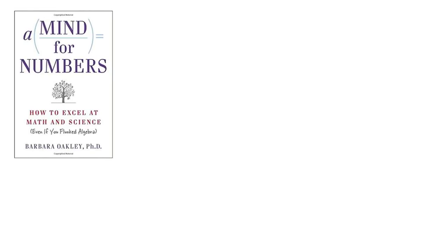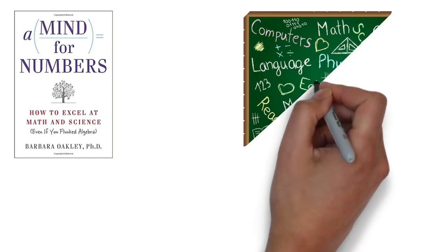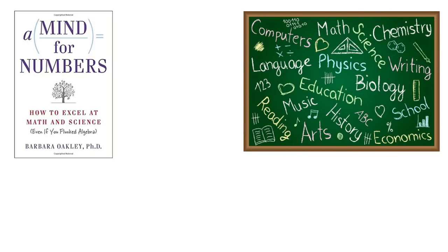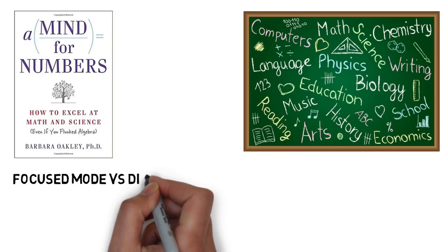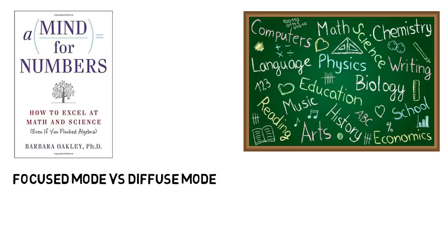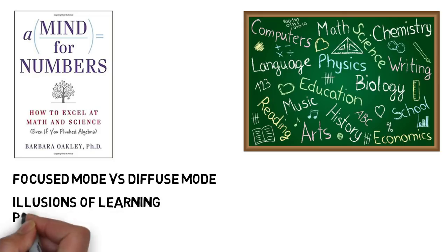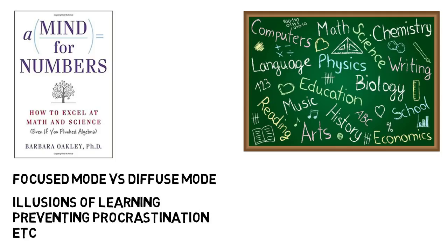The next book is a little different and that is A Mind for Numbers which I've talked about many times but had to include. This is about how to excel in math and science, but really can apply to any subject. It's more about how to learn. The author talks about the two different modes of learning, focused and diffused mode, and how you have to go in and out of both of them to achieve true mastery of a subject. She reveals illusions of learning, how to prevent procrastination, and much more. I have made a video on this book so I'll end with that quick summary.